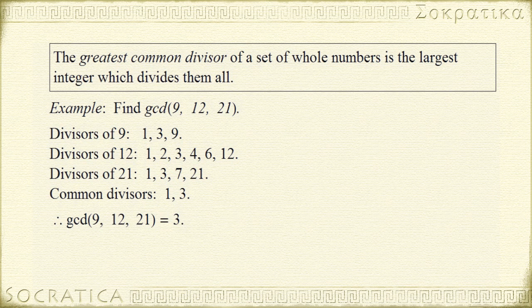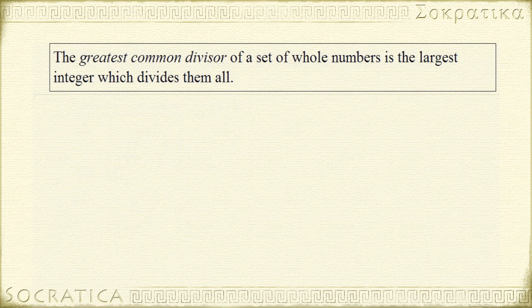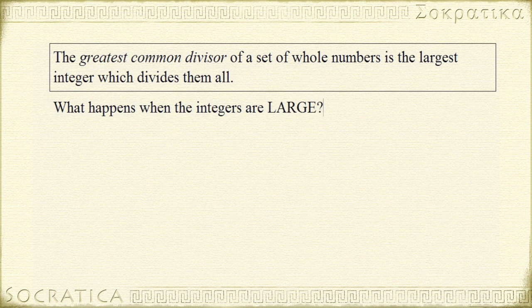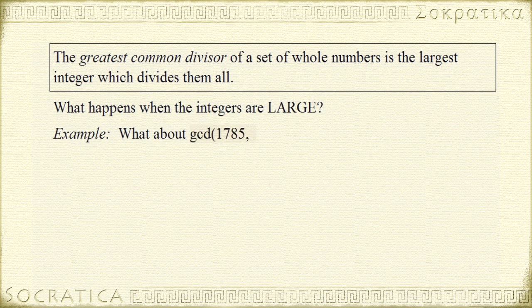Now, this method for finding the greatest common divisor is okay when your numbers are small, but what happens when you work with very large integers? For example, what if you had to find the greatest common divisor of 1,785 and 546? This would be a very difficult method. Luckily, there are additional ways to find the greatest common divisor, and one of the oldest is called the Euclidean Algorithm, which we'll discuss in another video.